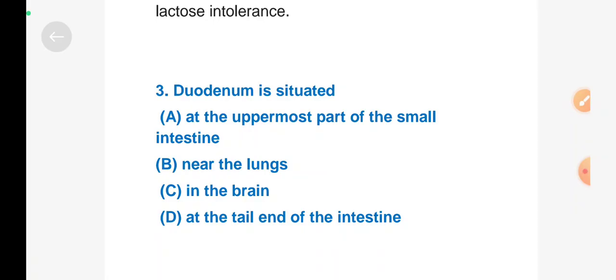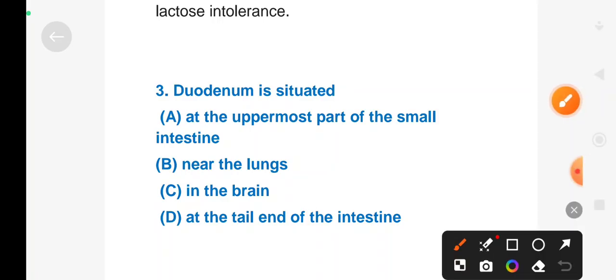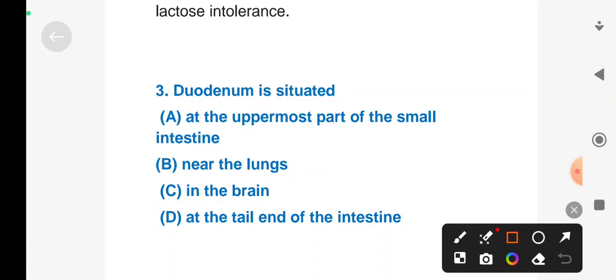Next question: Duodenum is situated - Option A: at the uppermost part of the small intestine, Option B: near the lungs, Option C: in the brain, Option D: at the tail end of the intestine. Right answer is Option A, at the uppermost part of the small intestine.